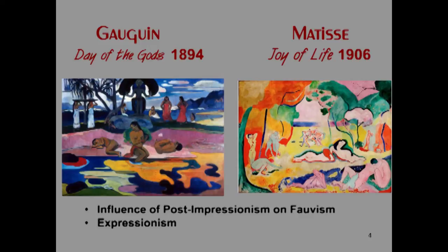Here you can see this work that so upset the critic. It's Matisse's Joy of Life from 1906, and I'm comparing it to Gauguin's Day of the Gods from 1894, just to show you how post-impressionism — Gauguin — influenced the Fauves.